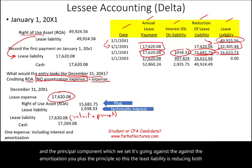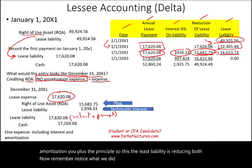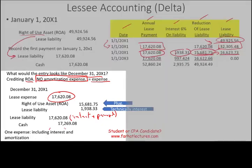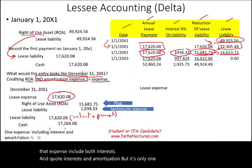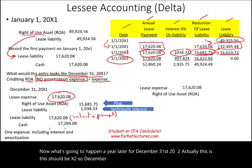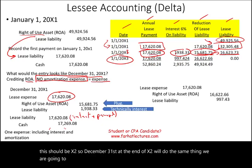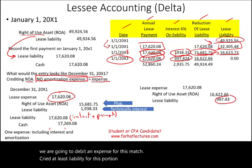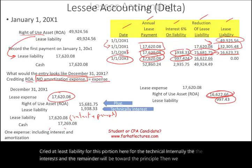Notice we used one expense only — lease expense — which includes both the interest component and the principal/amortization component. This process repeats for December 31, 20X2: debit lease expense, credit lease liability for the technical interest portion, credit right-of-use asset for the principal, then pay off the liability.